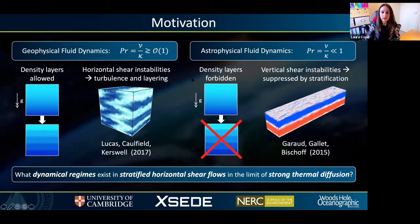On the other hand, density layers can't develop in the limits of strong thermal diffusion in astrophysical flows, since any density perturbations away from the background state will rapidly diffuse away. For vertical shears it's been shown, for example by Garot et al in 2015, that shear instabilities are suppressed provided you have sufficiently strong stratification, so this rules out any possible transition to turbulence in this regime.